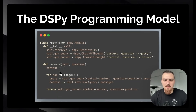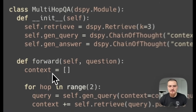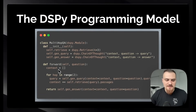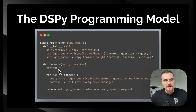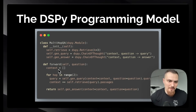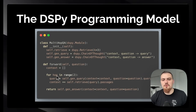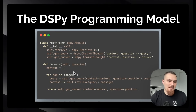We start off by defining an empty list for context. This also inspires thinking into how we can have local memory in our forward paths, how we can use other functions that aren't parametric but we can put them in the forward paths of our program. We loop through — you can set this as a hyperparameter to the program, say how many hops. In multi-hop question answering, you get a super complicated question, so you need to break it into sub-questions in order to answer the question.